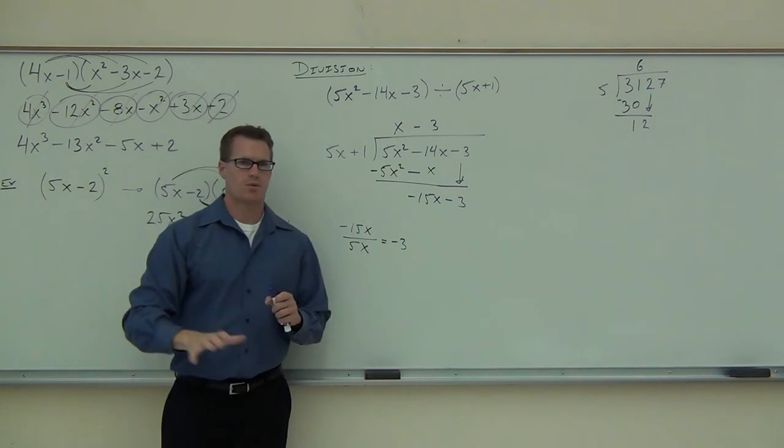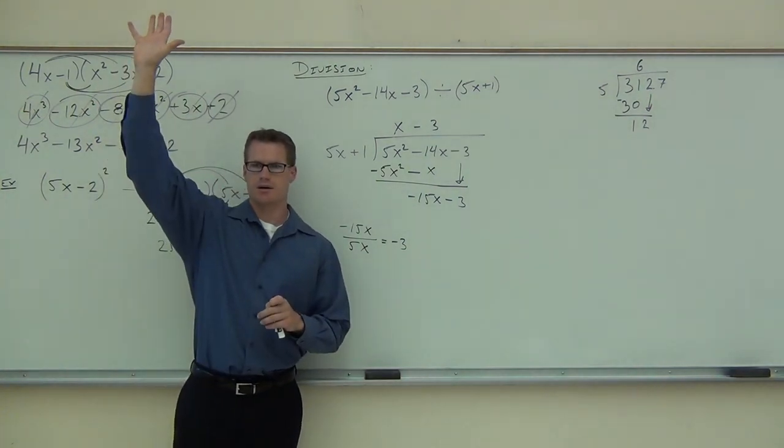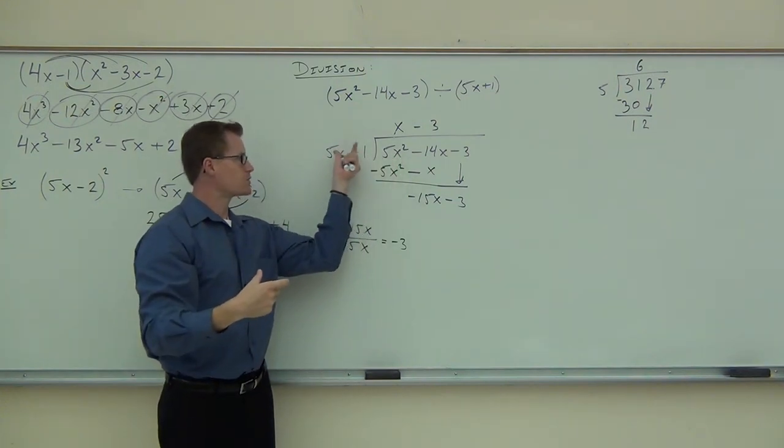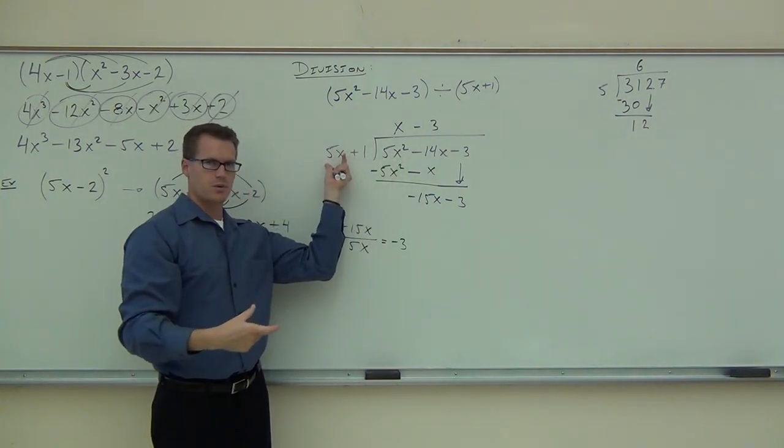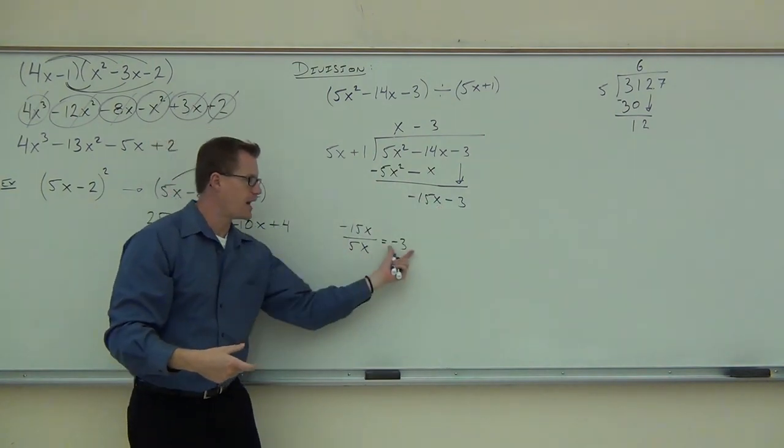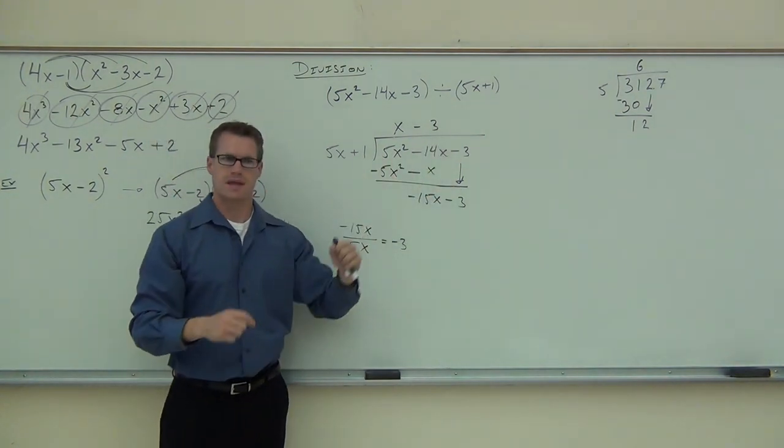Would you raise your hand if you saw how we're getting the x and the negative 3 like that? We're dividing the first term of these polynomials by the first term of our divisor. What we're dividing by. So our negative 15x divided by 5x. That is what's going up there. That's the whole deal here.